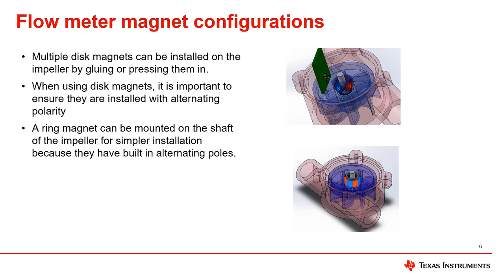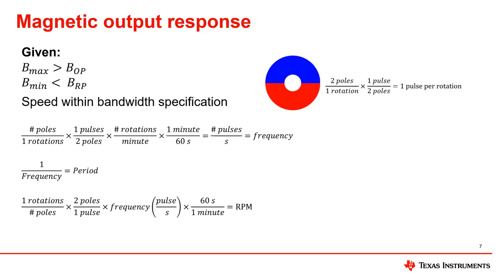Disc magnets can be used by pressing or gluing them into the impeller of the flow meter, but are more challenging to install because you have to ensure that the poles are alternating. The disc magnets can be positioned vertically or horizontally based on the axis of sensitivity of the chosen hall sensor. Ring magnets are the most simple to implement because they have built-in alternating poles, but are more expensive than disc magnets. The number of pulses per rotation is dependent on how many poles the magnet has.